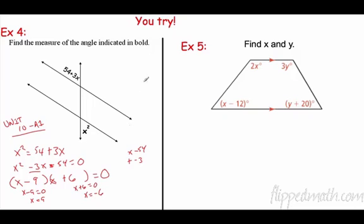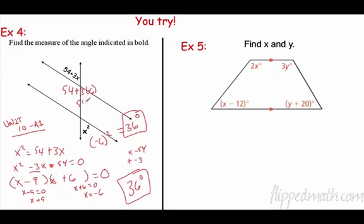All right. It says, find the measure of the angle indicated in bold. If we plug this in, x equals what? Well, negative 6 squared. So negative 6 squared is 36 degrees. That could be one of our answers. All right. If we plugged it in here, 54 plus 3 times negative 6, that's 54, plus negative 18, which again is 36. So that works. Let's try 9. 9 squared is 81 degrees. So in this case, we actually have two different answers. We could have 36 degrees or 81 degrees. It's kind of crazy. I understand. But totally possible.